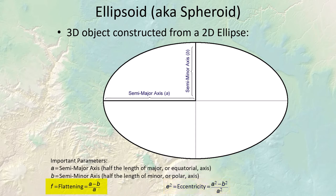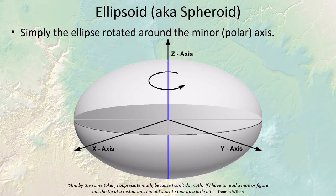We won't be generating ellipsoids ourselves — just be aware of these terms. To turn an ellipse into an ellipsoid, you rotate the ellipse around the minor axis, making a shape that looks like a squashed sphere. It does a decent job of modeling the shape of the planet with only two variables, and can be easily projected onto a flat surface.